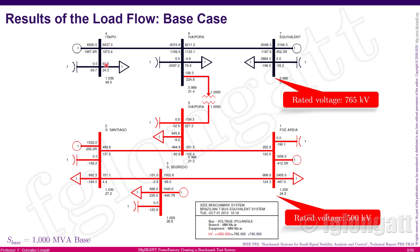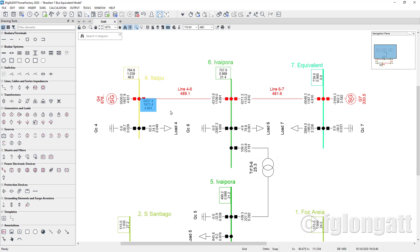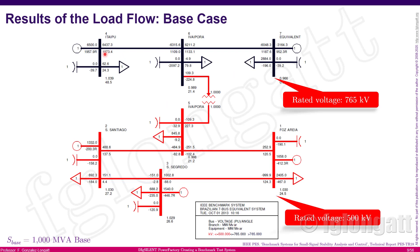On this very important transmission line, the output is 6,437.3 megawatts. Going to Power Factory, the result is 6,437.3 — a perfect match with the same decimal places. Now let me check the reactive power. In this case it is 1,973.4, and going back to the presentation the value is also 1,973.4 — a perfect match with the same decimal places.